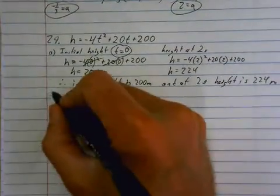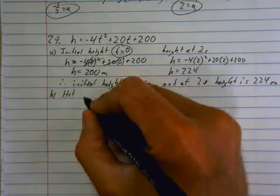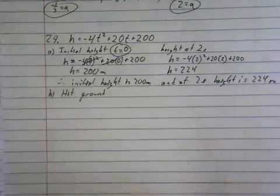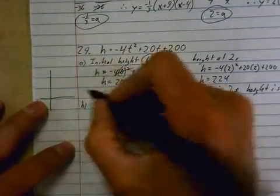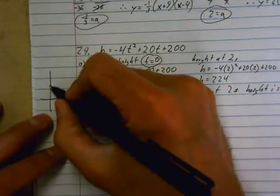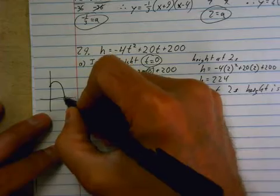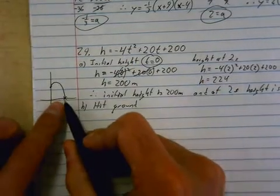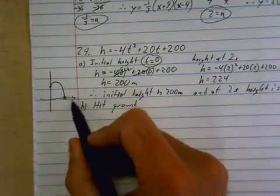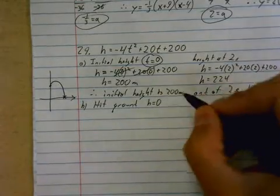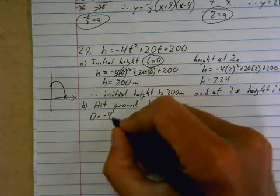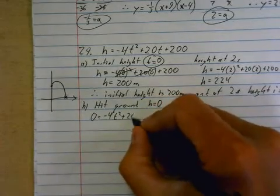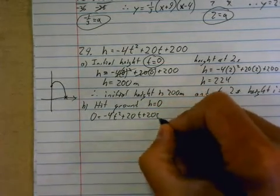A, done. Calculate when the jar will hit the ground. B. So B is the hit ground question. We get this all the time because the hit ground question is your zeros. If you visualize this thing, I'll sketch it for you. You chuck these pickles, they go up, they come down, they explode. So they hit the ground there, and that is your zero. So I'm going to plug in a height of zero, because that's what happens when it hits the ground. So 0 = -4t² + 20t + 200.